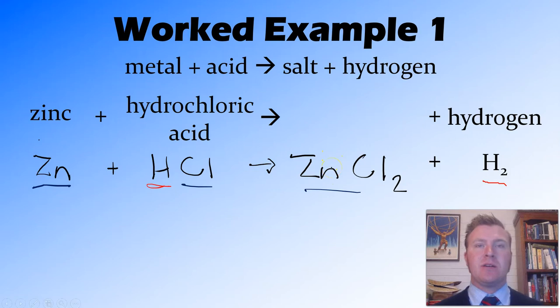And then all we need to do is balance this equation. On this side, start with our metals. We have 1 zinc, 1 zinc, that's good to go. Let's have a look at our ions, no ions. So we'll move on to non-metals, and we've got chlorine here, 1 chlorine here, and 2 chlorine here. So that's going to be a problem. So we'll put a 2 at the front, giving us 2 hydrochloric acid molecules.